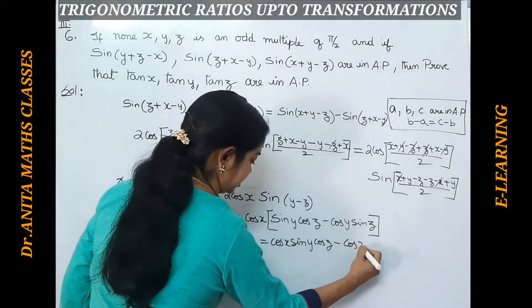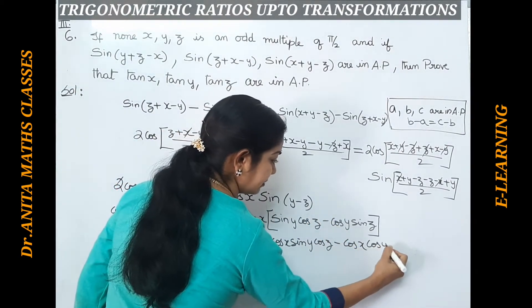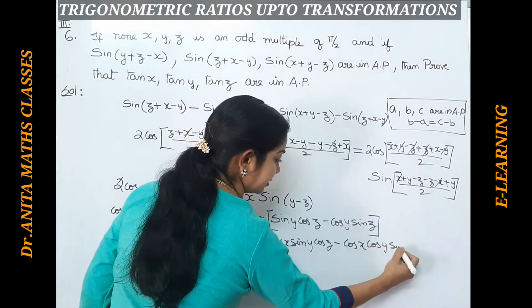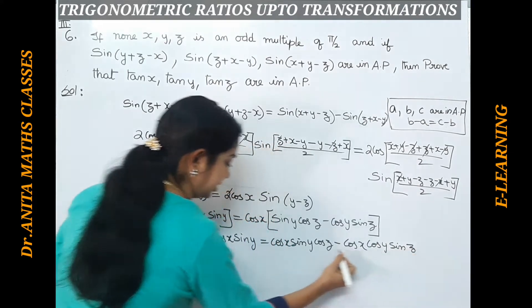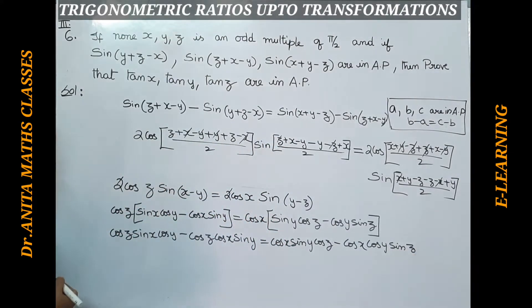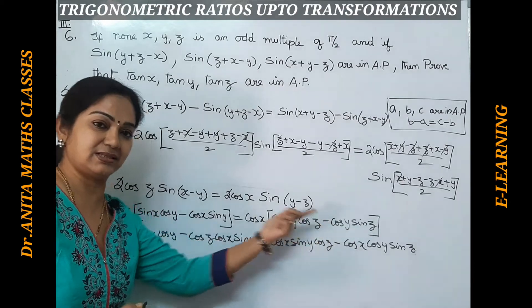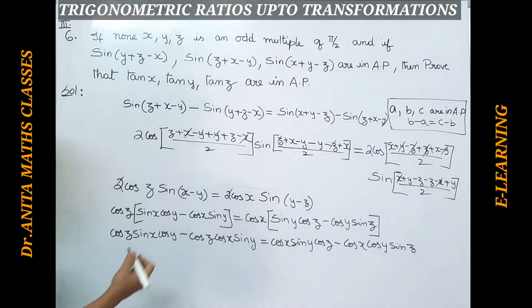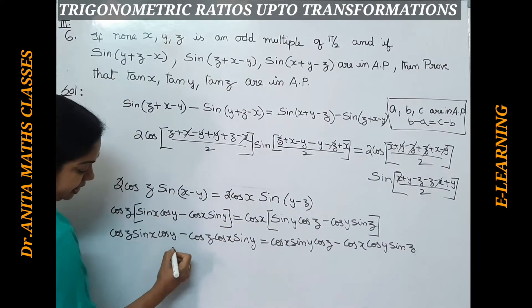After opening the brackets and multiplying through, we get the expanded terms. We will now divide throughout on both sides by cos x, cos y and cos z.